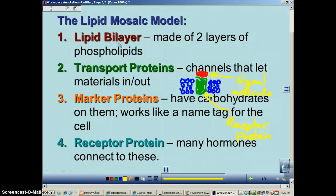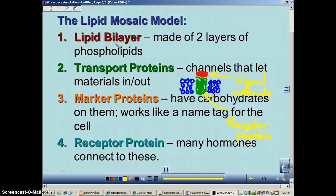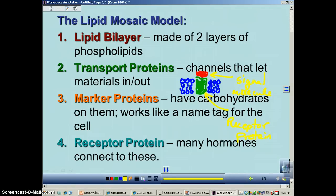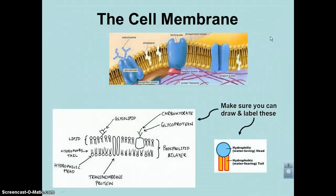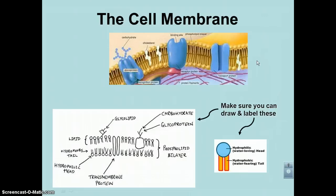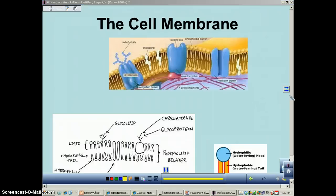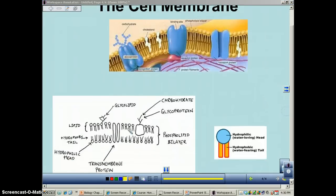So to review your lipid bilayer or your lipid mosaic model: two layer of phospholipids, transport proteins, marker proteins, and receptor proteins. If you did not like my drawings, here are some better ones. I want you to make sure of these that on any kind of test that you can draw and label these pictures.